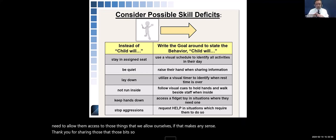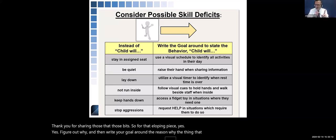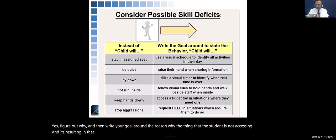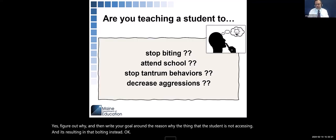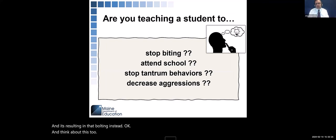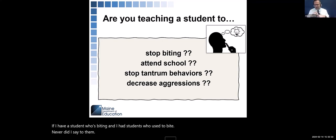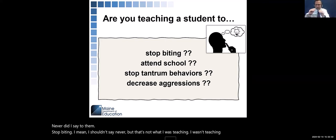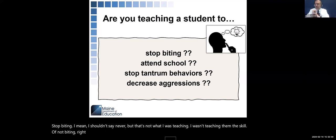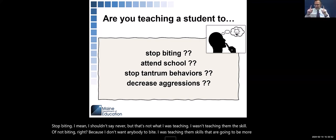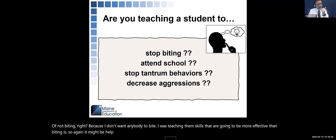So for that eloping piece — figure out why, and then write your goal around the reason why, the thing the student is not accessing that's resulting in bolting instead. If I have a student who's biting, I wasn't teaching them the skill of not biting — I was teaching skills more effective than biting. It might be 'help,' a 'break,' or a sensory component — offering a chewy instead.